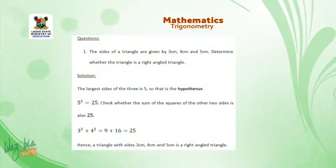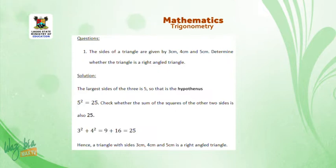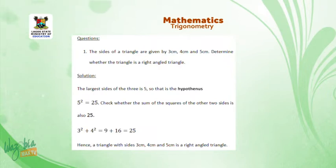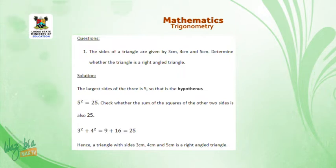For example, the sides of a triangle are given as 3, 4, and 5 centimeters — determine whether it is a right angle triangle. The largest side is 5; 5 squared is 25. The sum of squares of the other two: 3 squared is 9, and 4 squared is 16. Adding them gives 25, which equals 5 squared. Therefore, the 3-4-5 triangle is a right angle triangle.